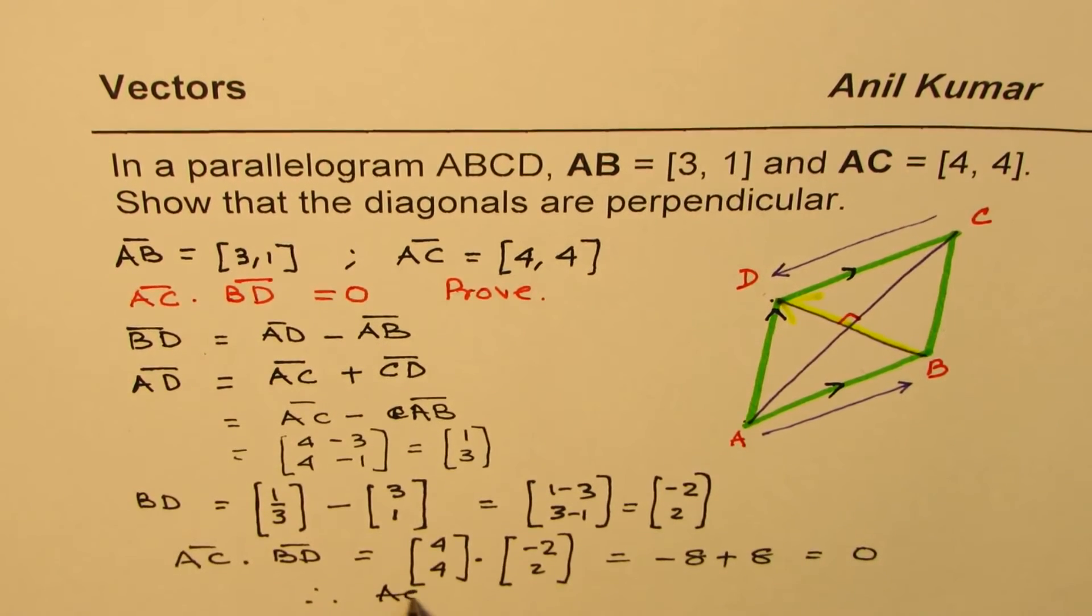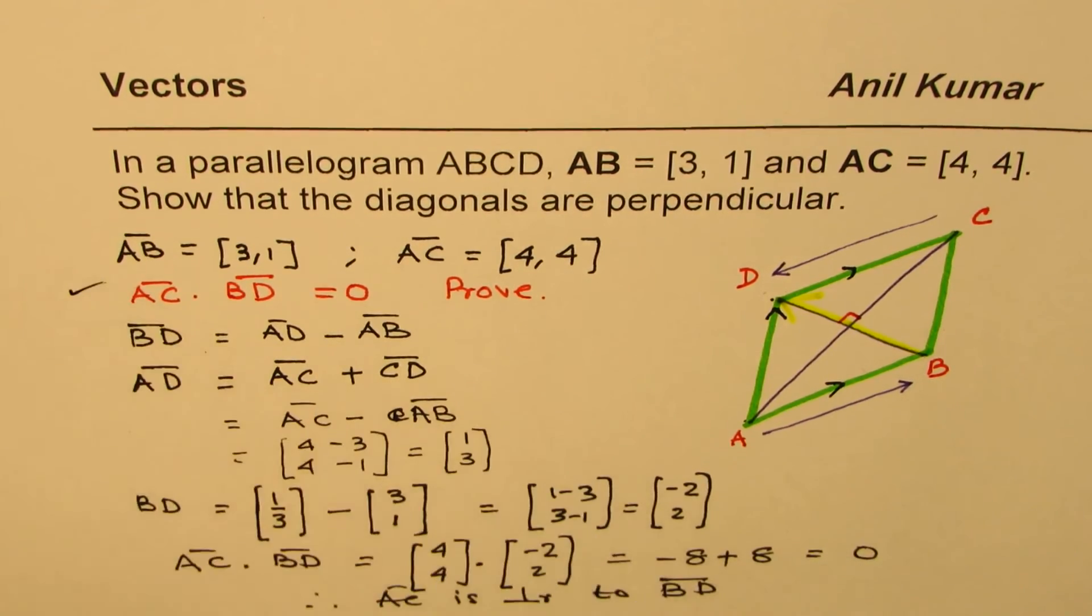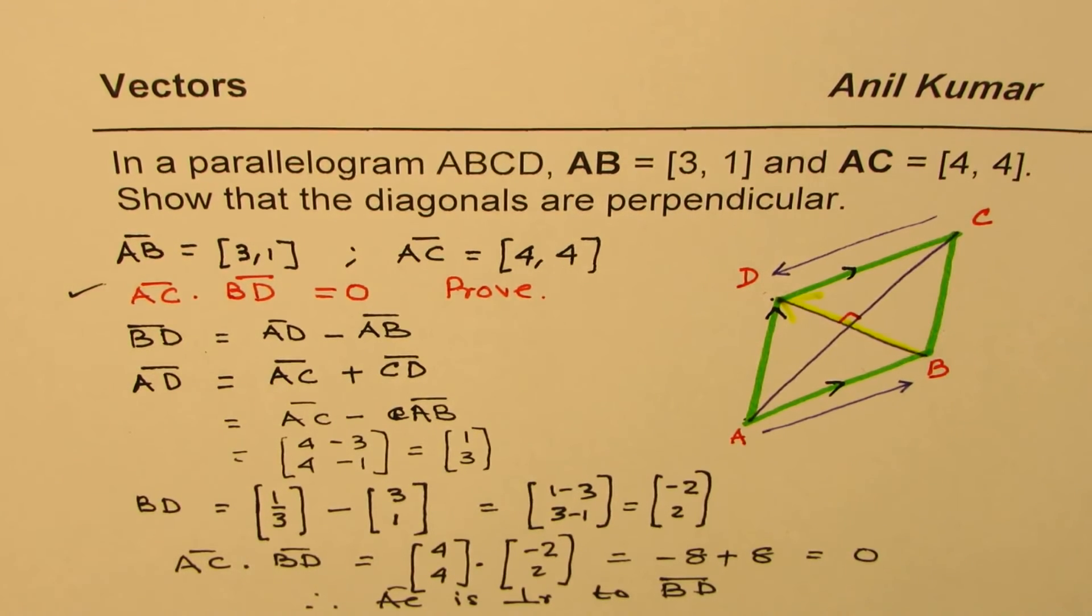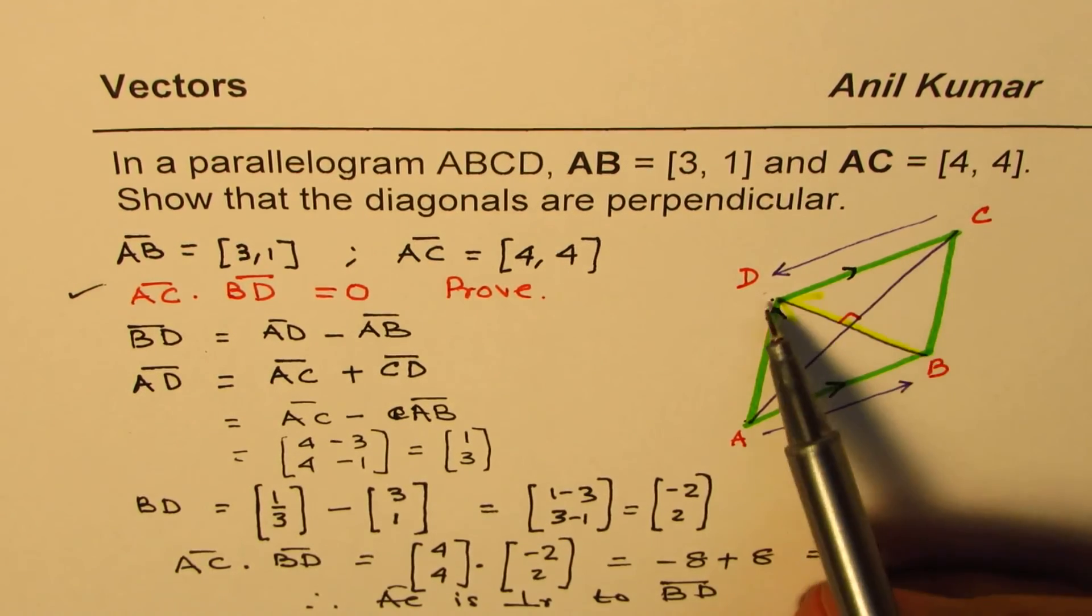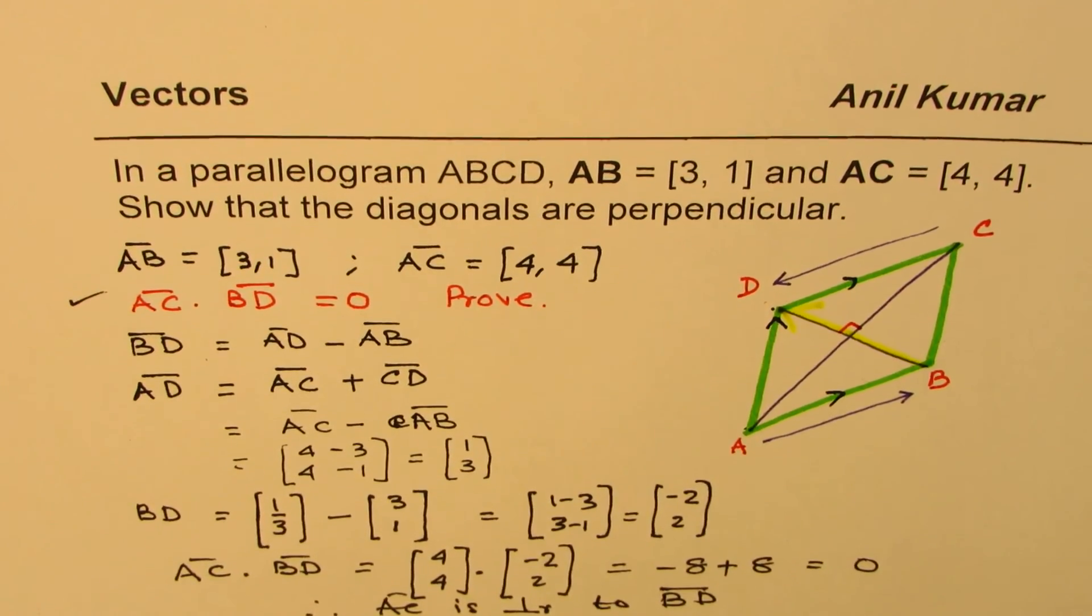Therefore, AC is perpendicular to vector BD. Since the dot product is 0, this is what we have proved. I hope these steps are absolutely clear. Go through these steps, try to understand how we wrote CD in terms of A and B, and then solve the question. I'm Anil Kumar. You can always share and subscribe my videos and put some likes. Thank you and all the best.